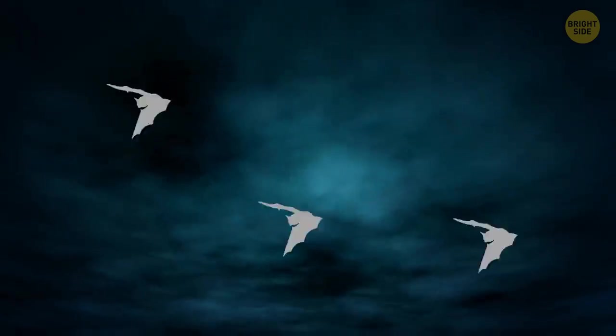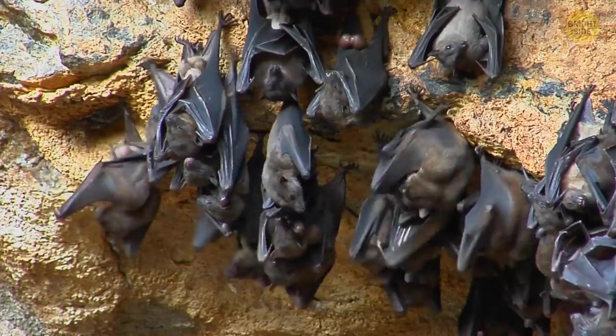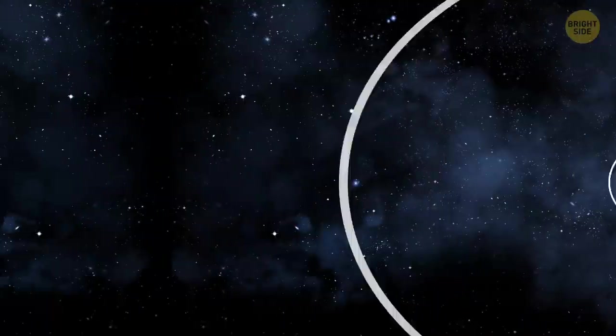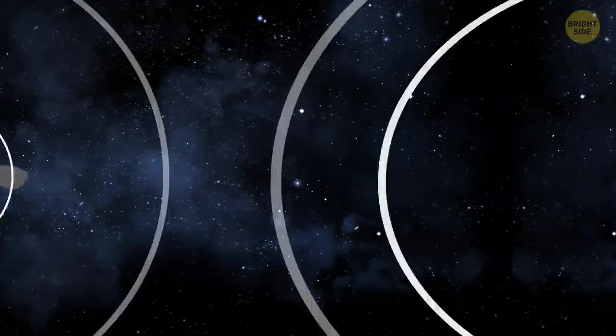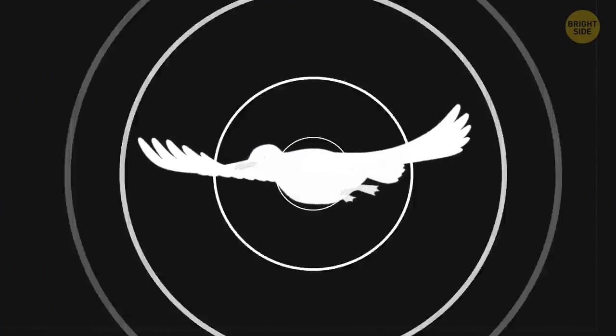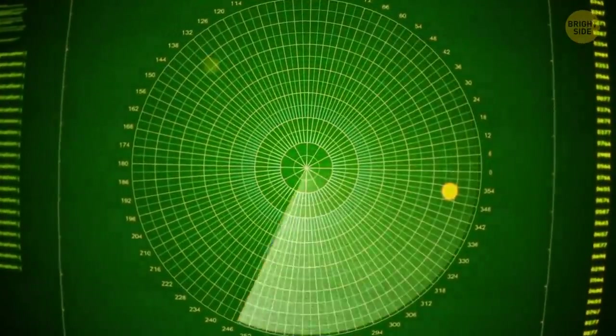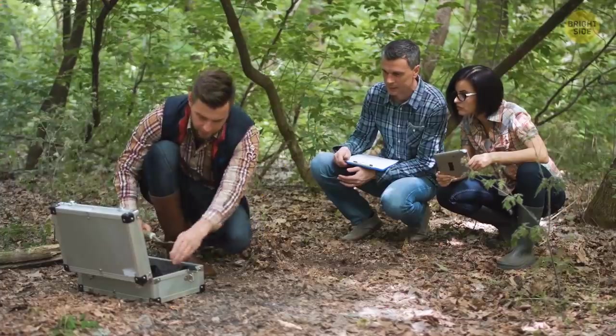Bats use echolocation for hunting. They do this by making a clicking noise to spread an ultrasound wave and listen carefully. If the wave collides with something, it returns back, and the bat can tell how big the object is and how far away it is. It works like sonar does on submarines and ships. This unique technique is a big problem for the bat's prey, like moths and butterflies. In 2020, scientists discovered two incredible species of moth that have found a genius way to hide from the bat's sound waves.